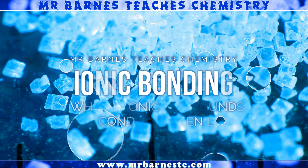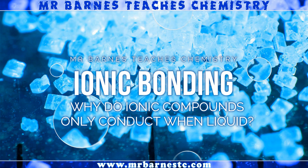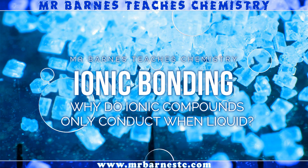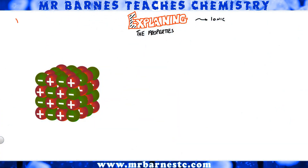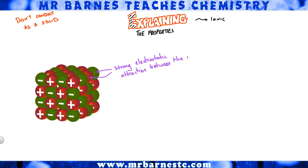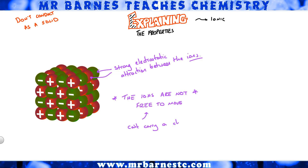So let's get back to the point of this video. Why do ionic compounds only conduct when liquid and not when solid? It's all to do with that strong electrostatic attraction between the cations and anions. If that strong electrostatic attraction is there, the ions are not free to move — they're held in place in that lattice. If they can't move, they can't carry a charge.